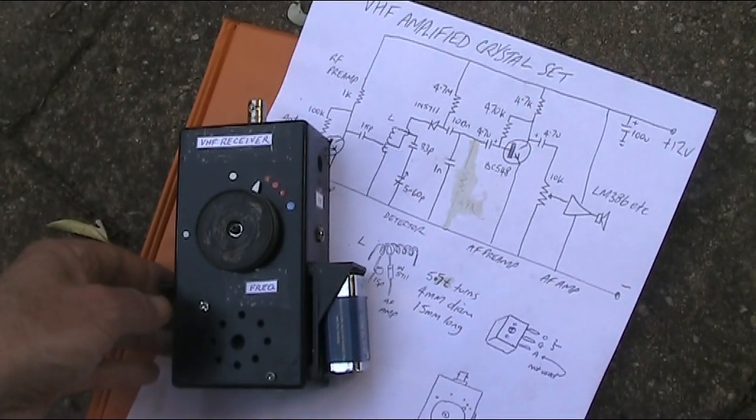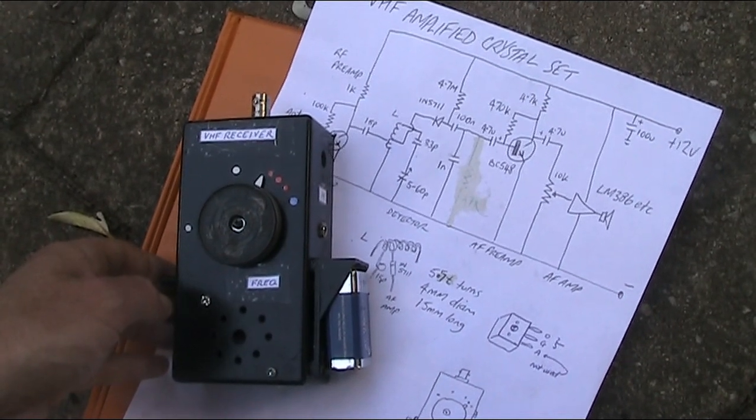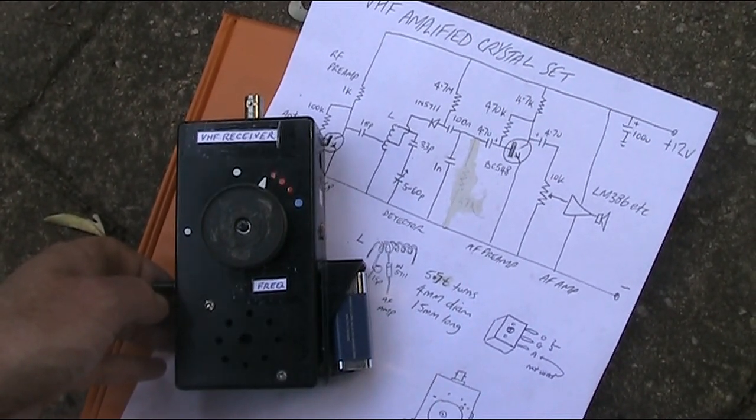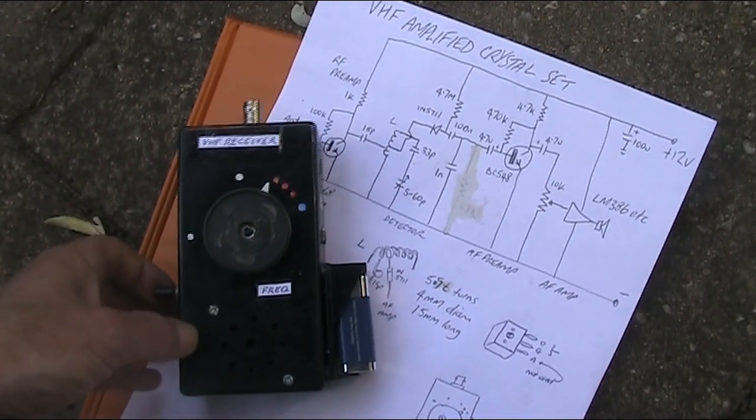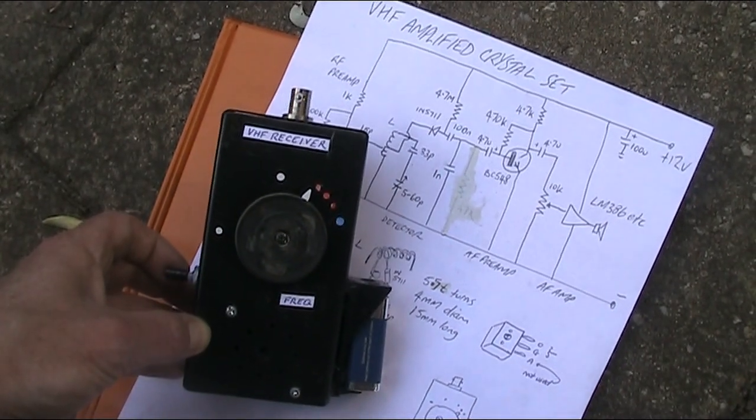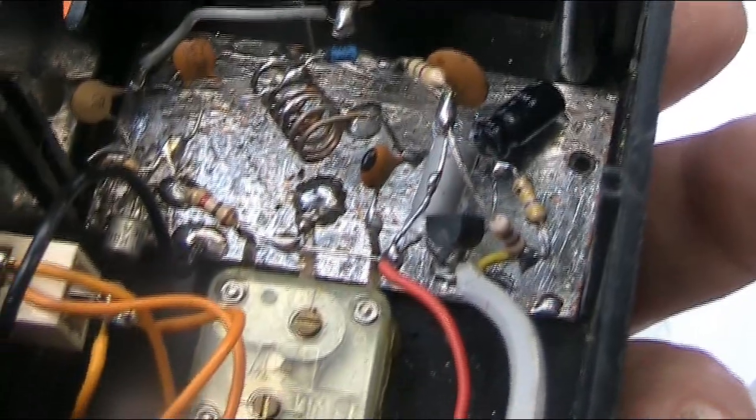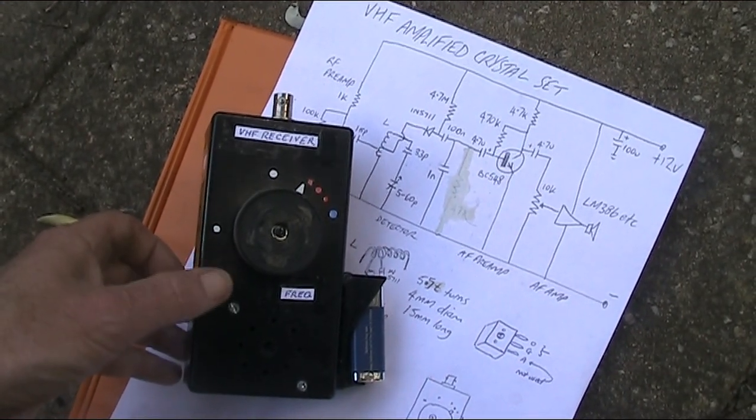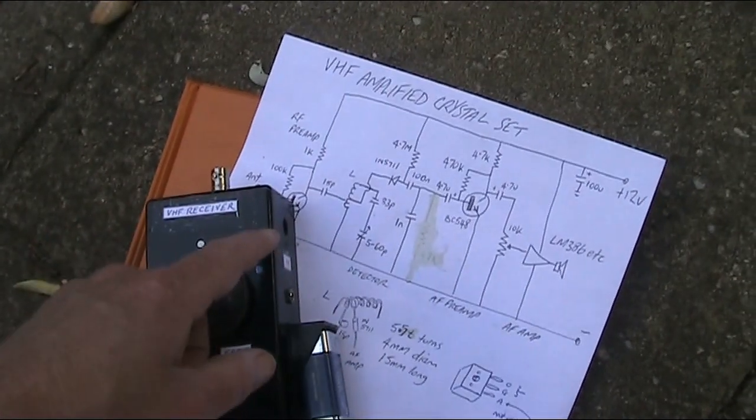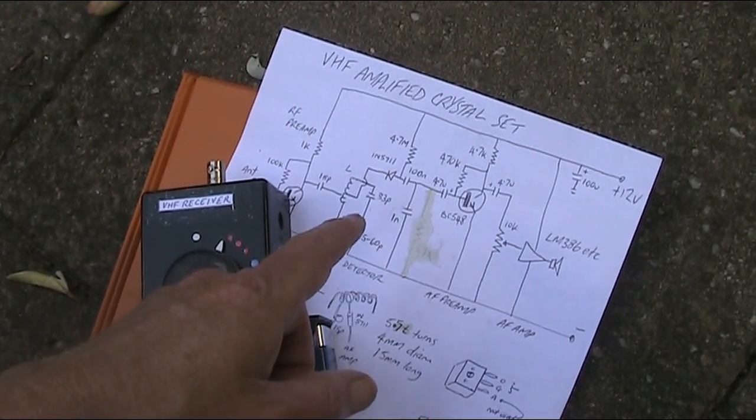Have you ever built a VHF crystal set? Not many people have, but the surprising thing is that with a bit of amplification, AF and optionally RF, you can actually still hear signals on one. Here's an example of one that tunes from 100 to 200 MHz. It's very simple, just two transistors, one IC and a detector diode.